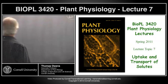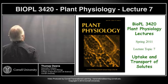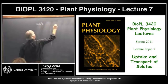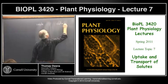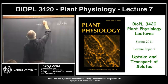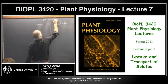Let's take a very simple example. Here's a plasma membrane — here's inside the cell, here's outside the cell. Let's assume this is a typical plant cell, so the membrane potential is going to be something on the order of minus 120 millivolts.